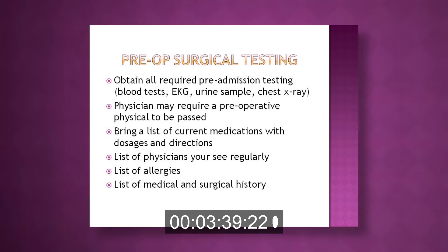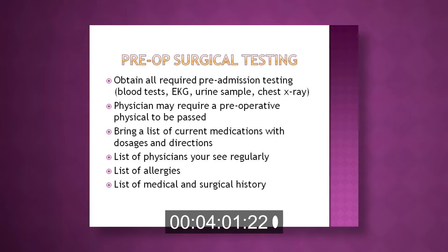Obtain all required pre-admission testing such as blood tests, EKGs, urine samples, or chest x-rays. A physician may require a preoperative physical to be passed. Bring a list of current medications with dosages, a list of physicians you see regularly, a list of allergies, and a list of your medical and surgical history.